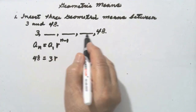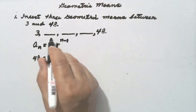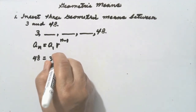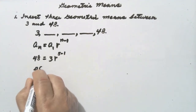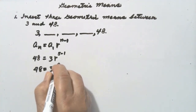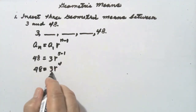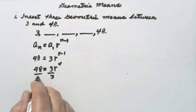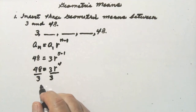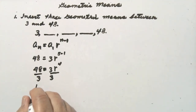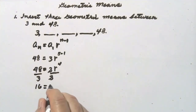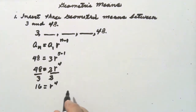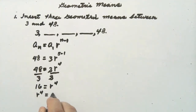We count the terms: 1, 2, 3, 4, 5 — the number of terms including the three missing geometric means is 5. So n minus 1 is 5 minus 1, giving us 48 is equal to 3 times r raised to the 4th power. Dividing both sides by 3, we get 16 equals r raised to the exponent of 4. This can be written as r raised to the exponent of 4 is equal to 16.